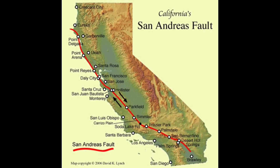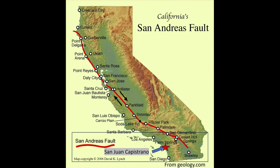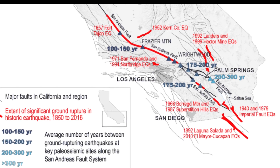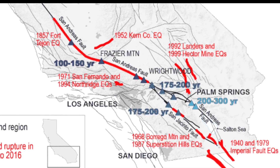The San Andreas Fault runs from the Gulf of California all the way past San Francisco into what's called the Mendocino Triple Junction, extending about 750 miles through California. Along this whole section it can be broken into three general regions: northern, central, and southern. For the San Juan Capistrano earthquake, we're most concerned with the southern portion. In a large fault zone like the San Andreas, it's not just a single strand — there's a series of smaller faults adjacent to the main fault that can create and release energy.